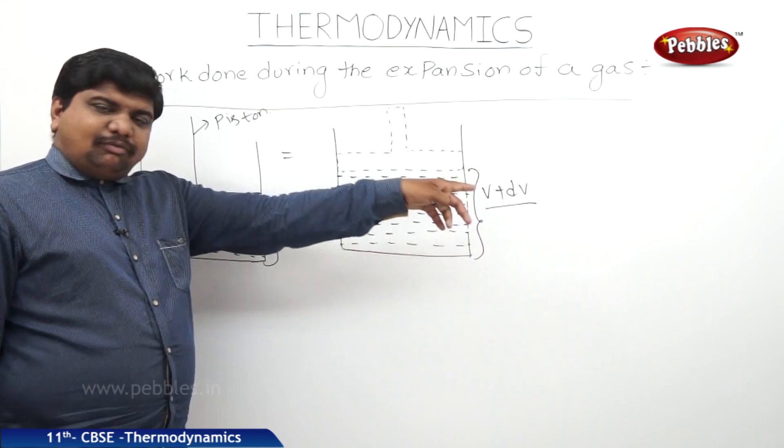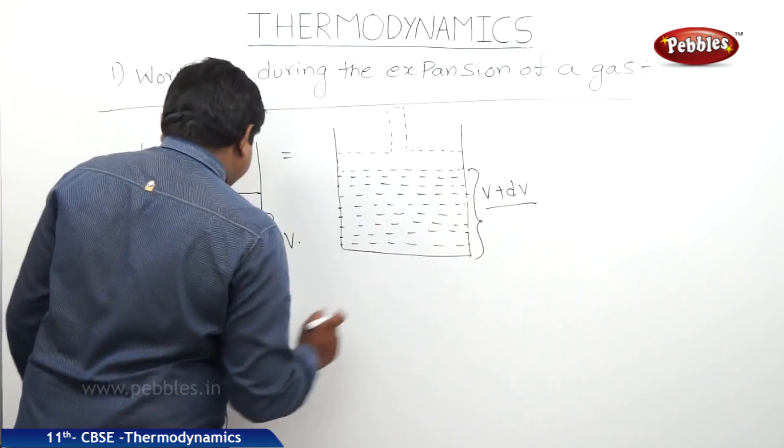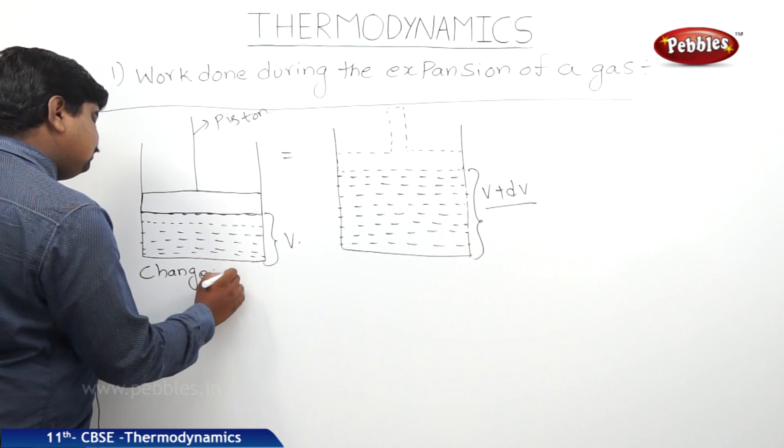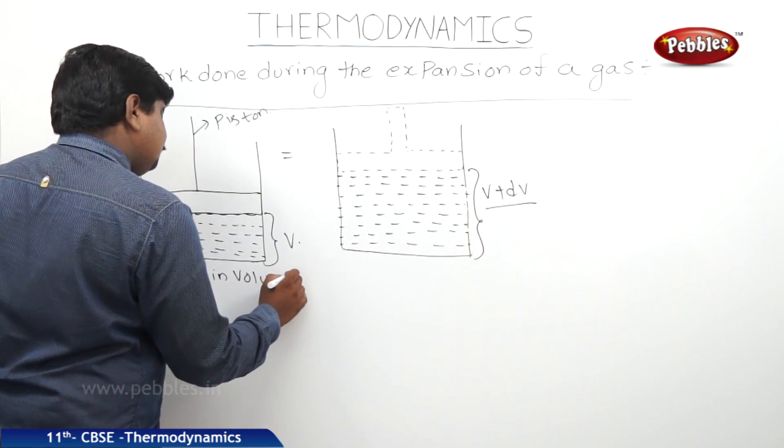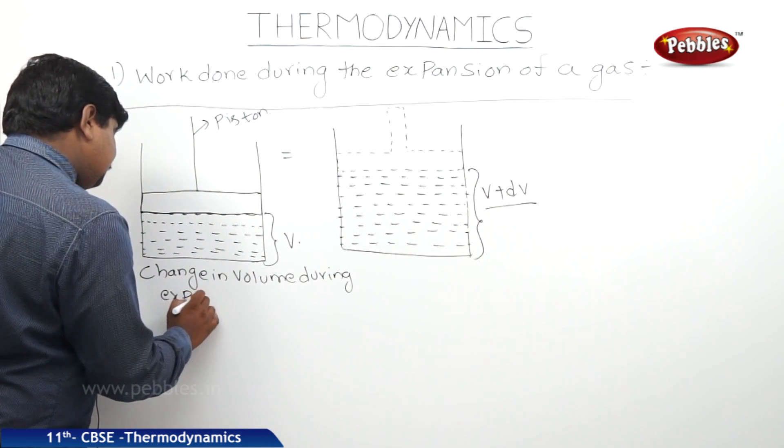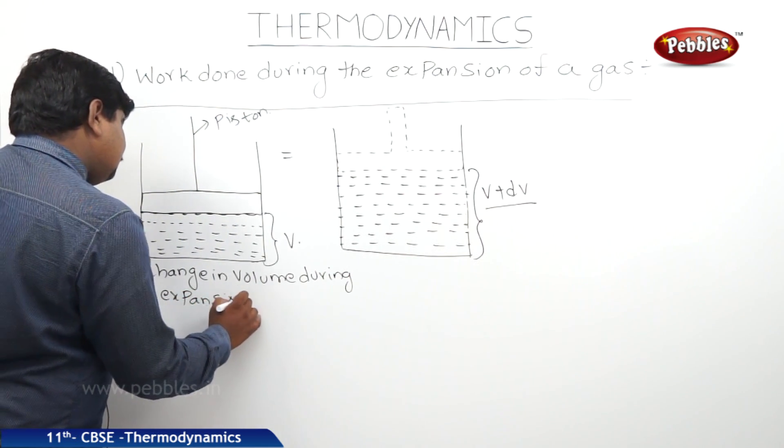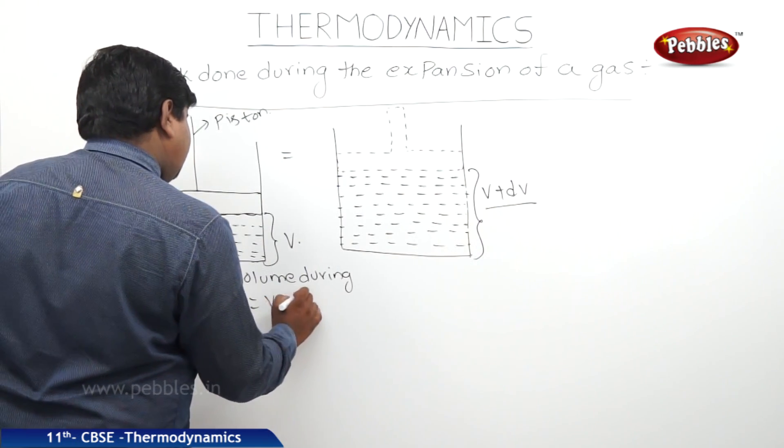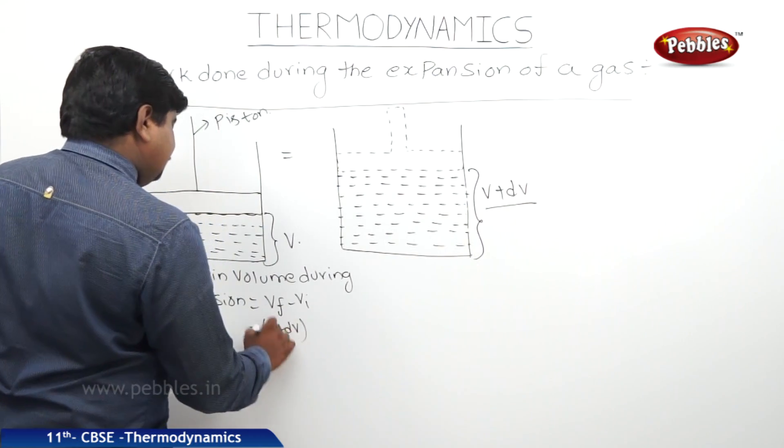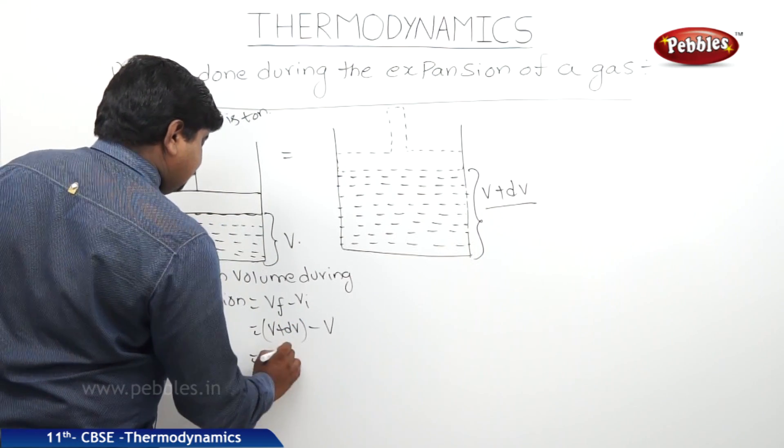There is a small change in the volume, dV. Change in volume during expansion equals final volume minus initial volume. Therefore, it is V plus dV minus V, which equals dV.